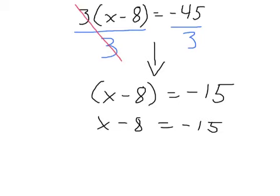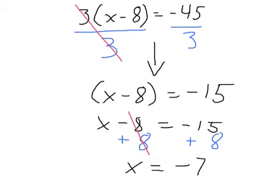Now all we have to do is get rid of this minus 8. To do that, we add 8 to both sides, which makes those cancel out. We're left with negative 15 plus 8, which is negative 7. So X equals negative 7. Going back to the original equation: negative 7 minus 8 is negative 15, times 3 is negative 45. The equation worked out just great. To recap: the first step is to divide both sides by the number outside the brackets, then get rid of whatever is being added or subtracted from X.